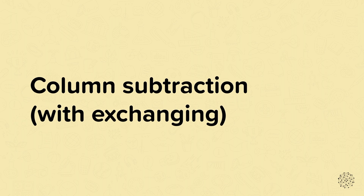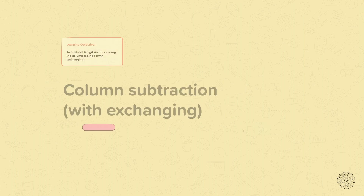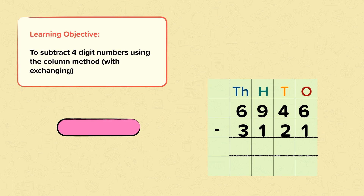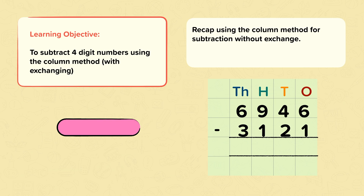Column subtraction with exchanging. In this nugget the learning objective is to subtract four digit numbers using the column method with exchanging. First we'll recap using the column method for subtraction without exchange, and then we'll use the column method with exchange.